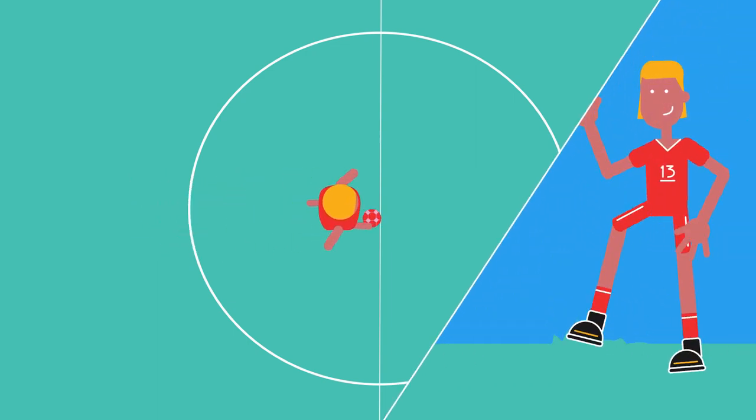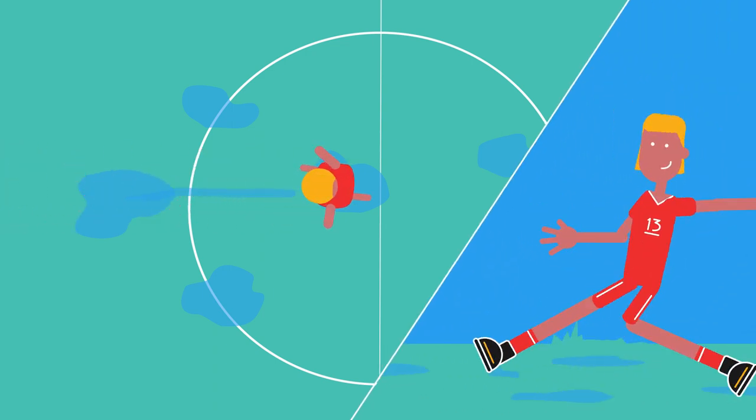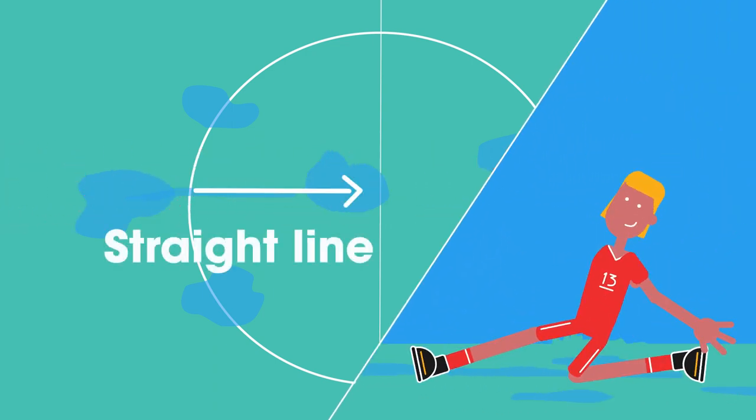To make this clear, think of a football player trying to turn. She digs her foot into the ground to provide the force to enable her to change direction. If the ground is very wet, her foot slips and she carries on in a straight line, in a skid.